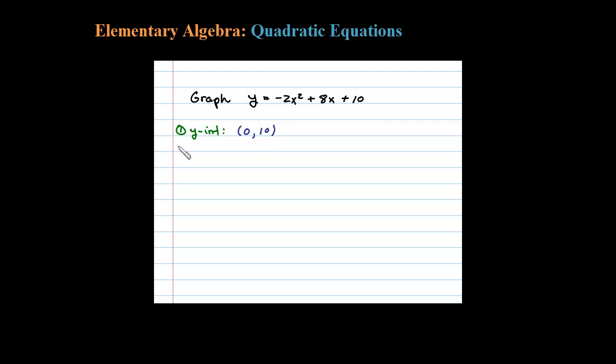Secondly, let's try to find those x-intercepts. To find the x-intercept you set y equal to 0. So in this case you get a quadratic equation: 0 = -2x² + 8x + 10.